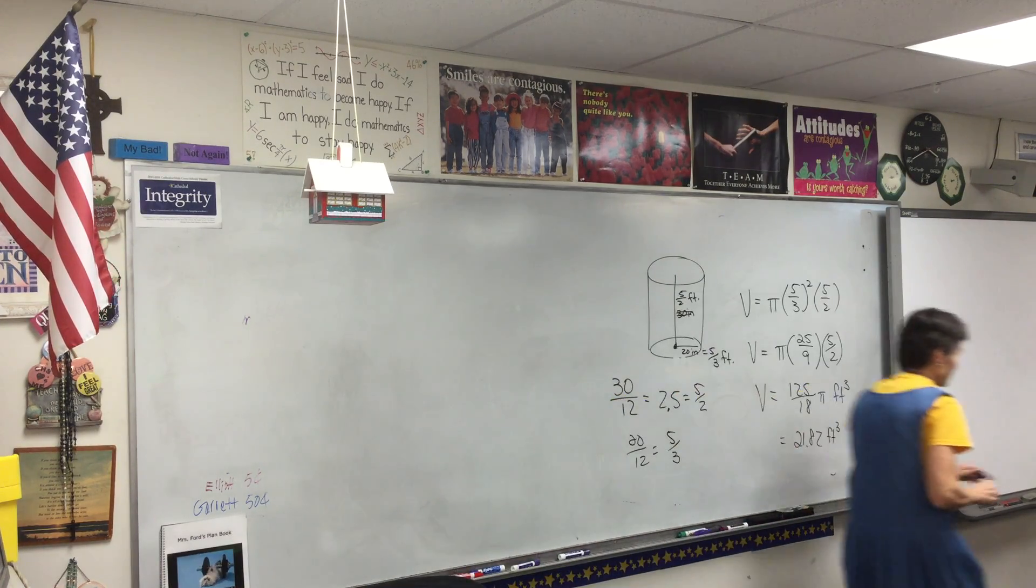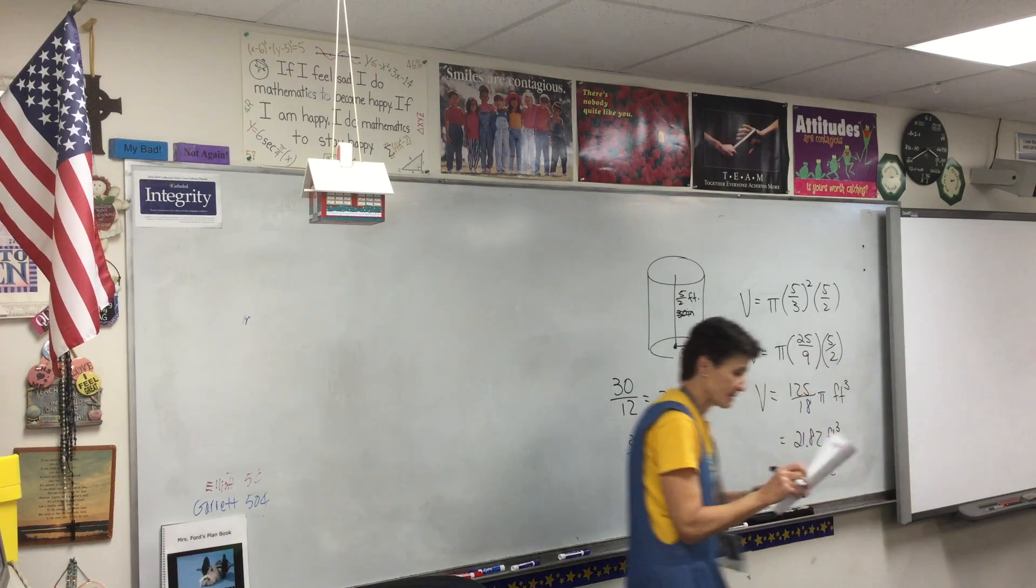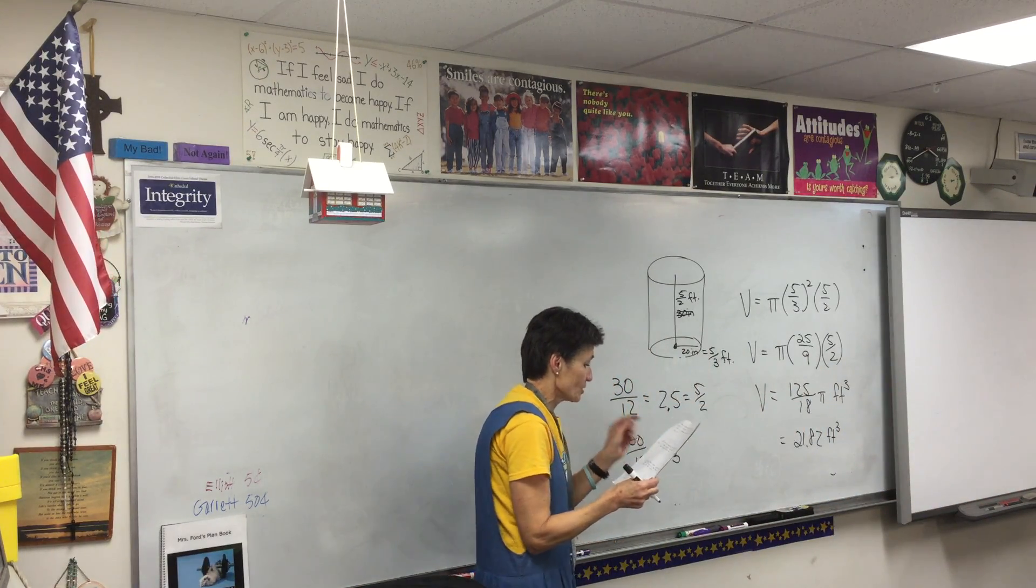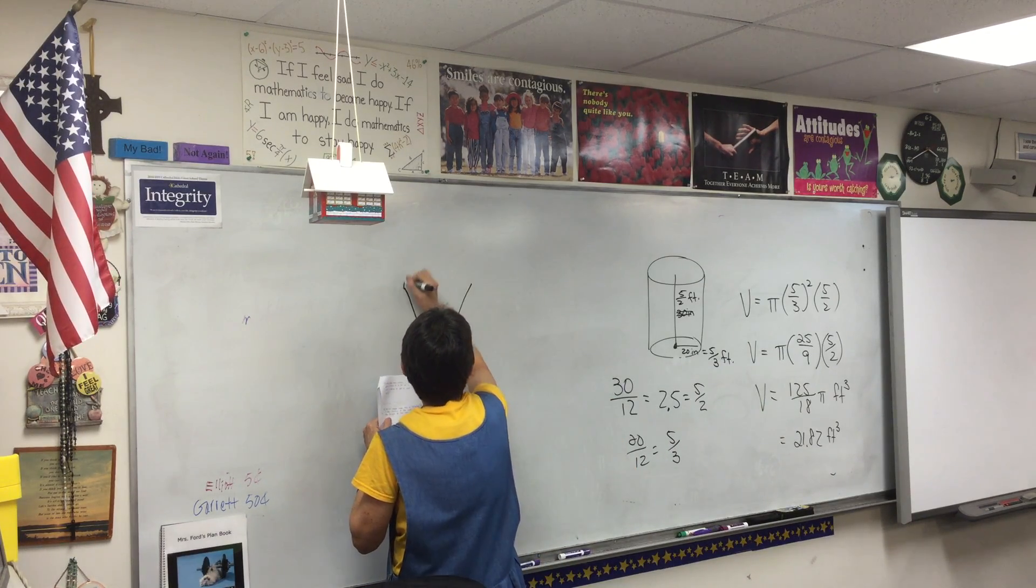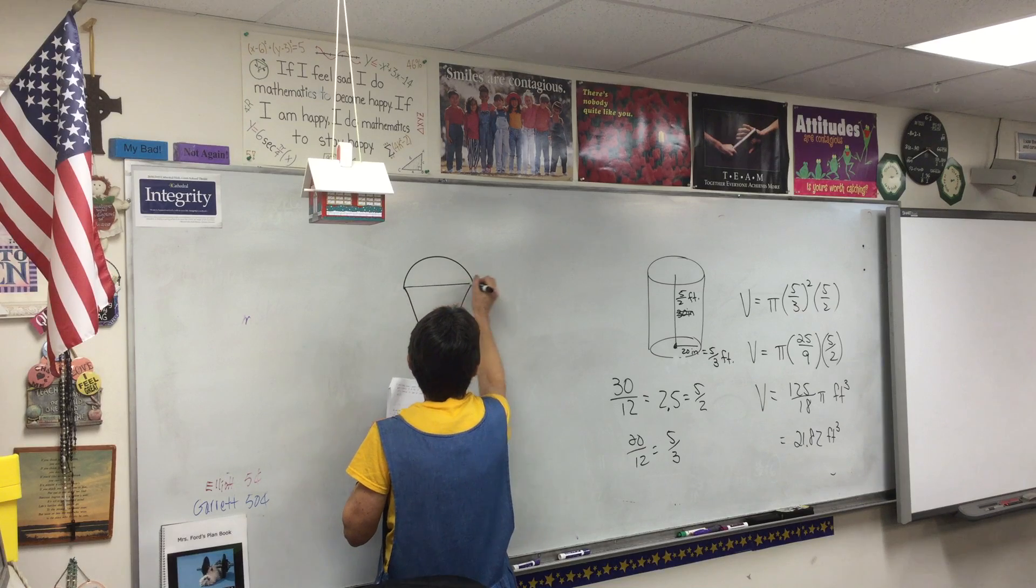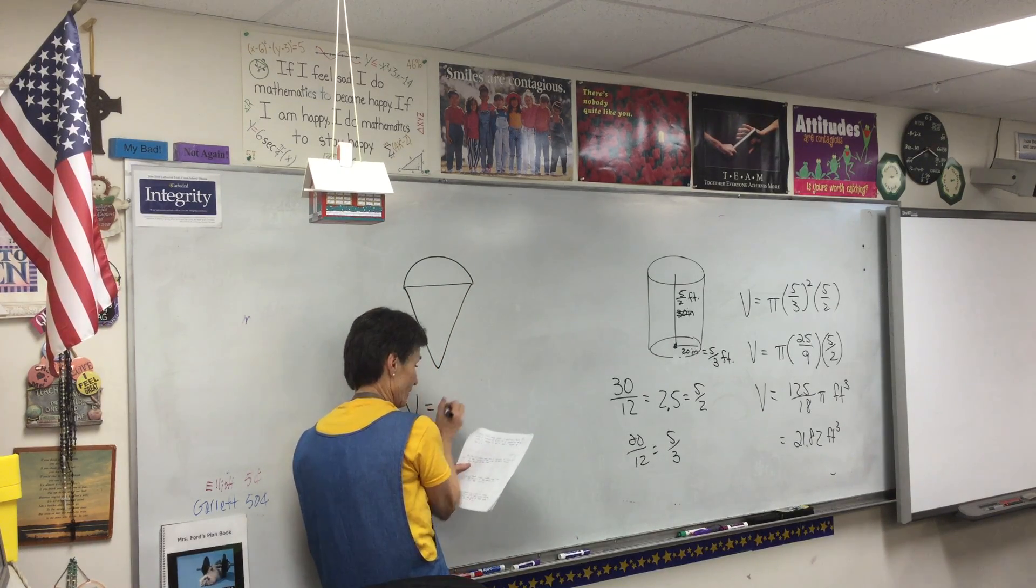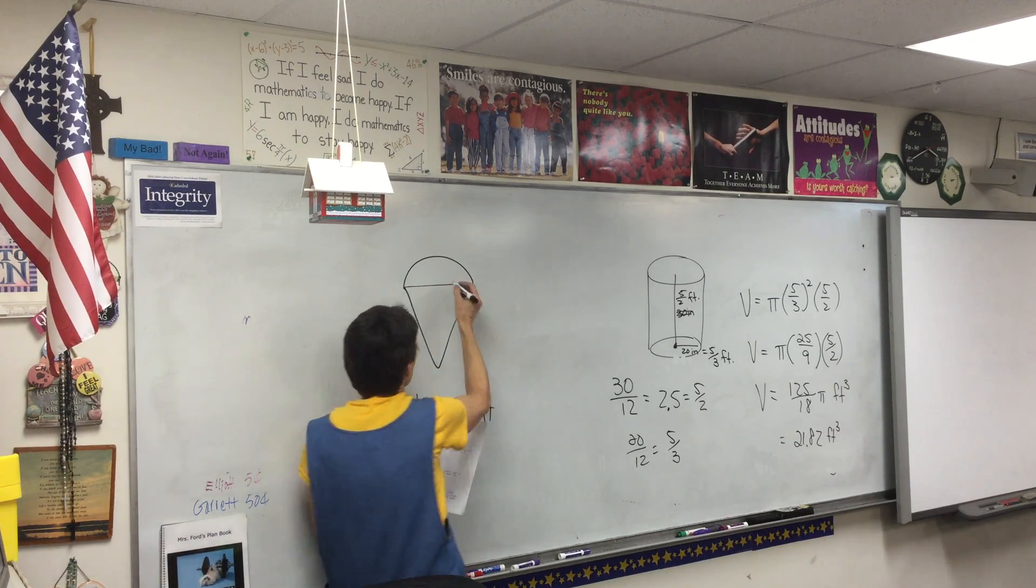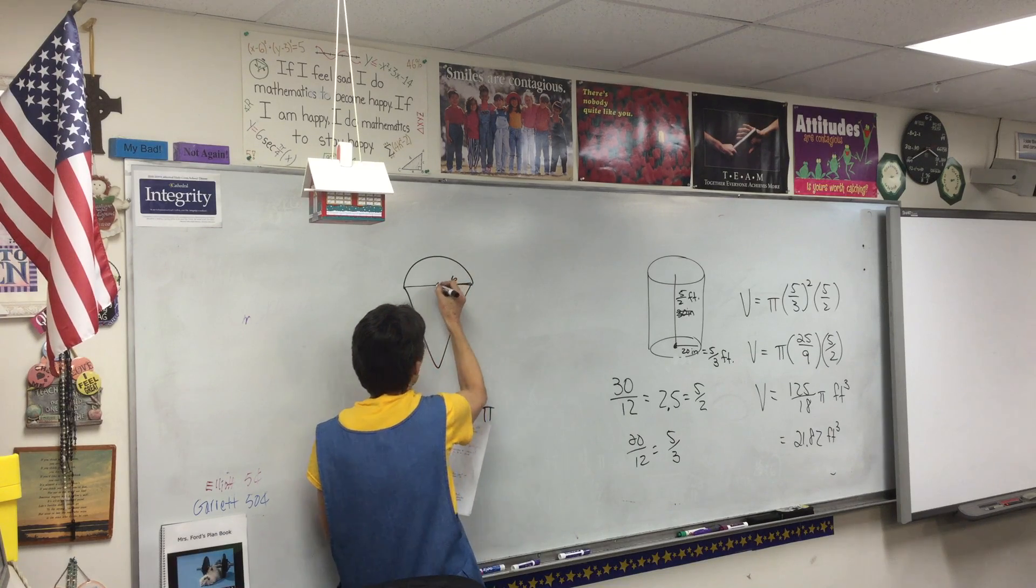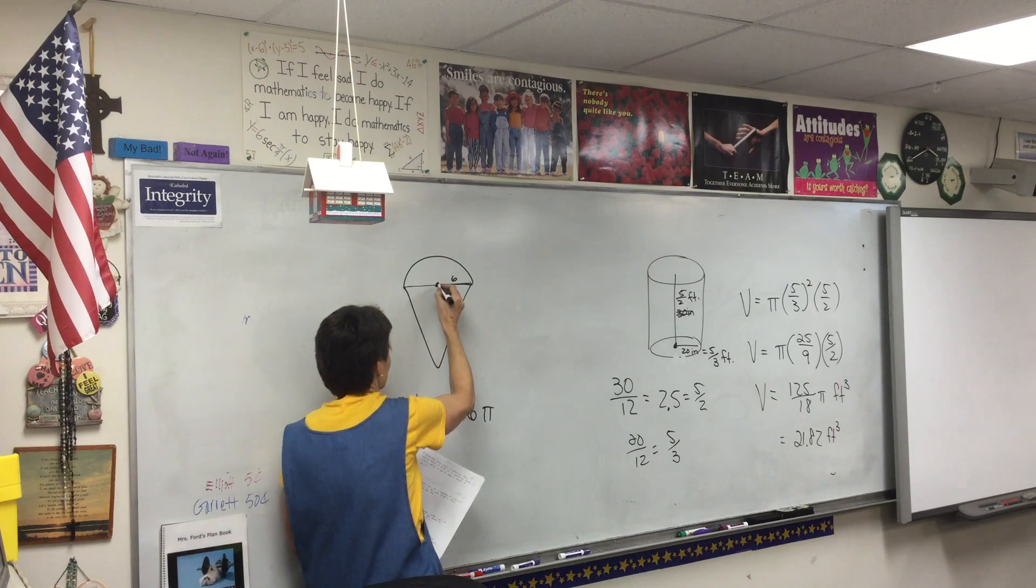Alright, so now we need to hopefully finish up our notes. An ice cream cone has a volume—so there's your cone—and it has a total volume of 156π. If the radius of the cone is 6, find the height of the cone.